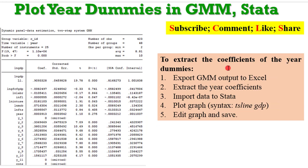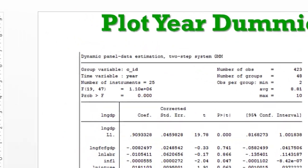The second learning outcome is to extract the coefficients and plot them in a graph. All you have to do is export the GMM output to Excel, extract the year coefficients from Excel, then import your data into Stata. From Stata you type in the command TSLineGDP to plot the graph. You do some minor editing and save. I have gone through steps 1, 2, and 3, so let's go to Stata and plot this graph.